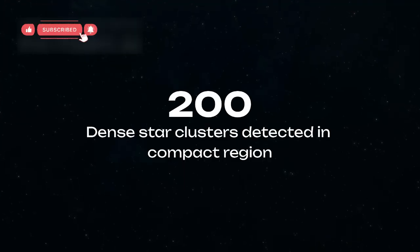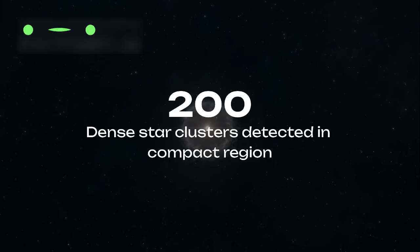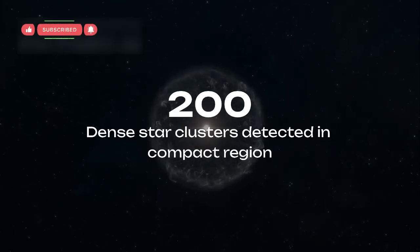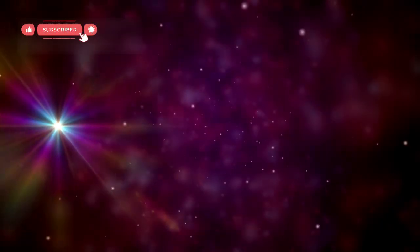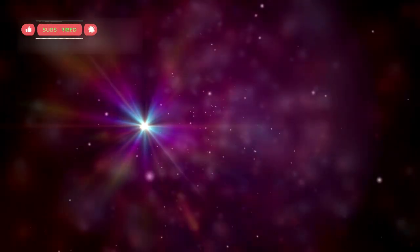Within this compact space, Webb detected over 200 dense star clusters, each containing thousands of newborn stars. That amount of star-forming material is comparable to the total gas content of the Milky Way, concentrated into an area only a tiny fraction of its size.